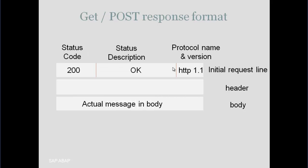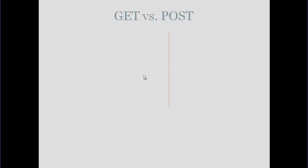When we send a request to the server, the server sends back a response. The response format also has three fields: the initial response line, header, and body. In the initial response line, the first field is the status code. If everything is okay, the status code is 200 and the description is 'OK'. If something goes wrong, for example if a file is not found, the status code is 404 and the description is 'File Not Found'.